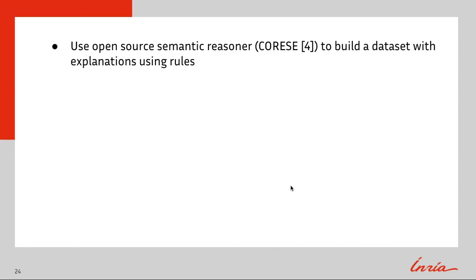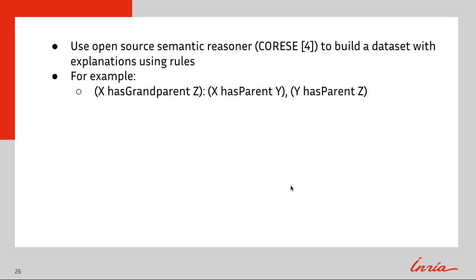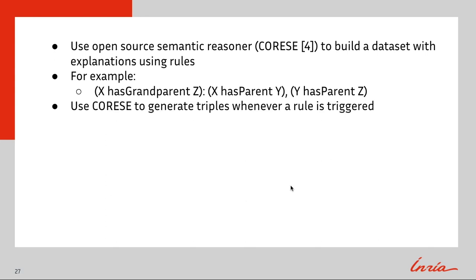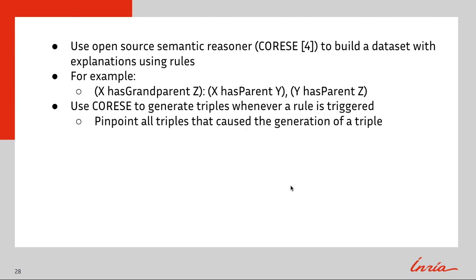In order to do this, we use an open-source semantic reasoner, CORAS, to build a dataset with explanations using rules. For example, if there are two triples in our graph where some entity x has parent y and y has parent z, CORAS will generate a new triple: x has grandparent z. That will be a triple in our dataset, explained by the two has-parent triples. In this work, we use CORAS to generate triples whenever a rule is triggered and pinpoint all triples that cause the generation of that triple.